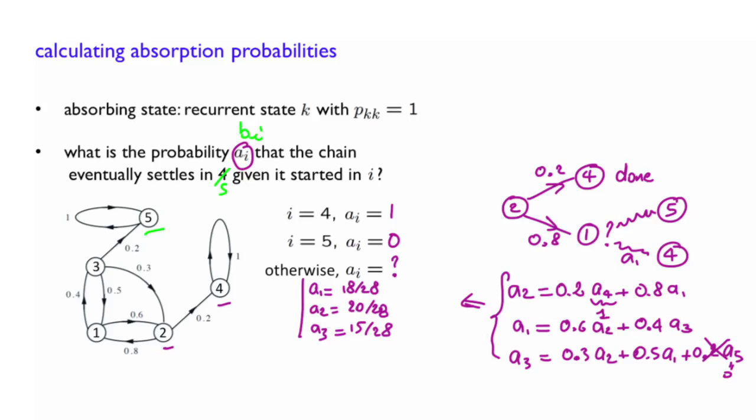For any state i, given that you started in i, you will eventually with probability 1 end up in either 4 or 5. So you have a of i plus b of i equals 1 for all possible i. So once you have calculated a1, a2, a3, a4, and a5, you get b1, b2, b3, b4, and b5 by using this formula.